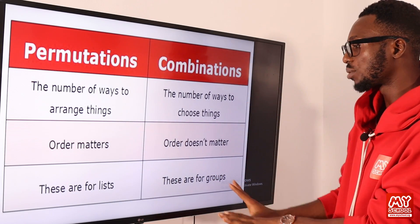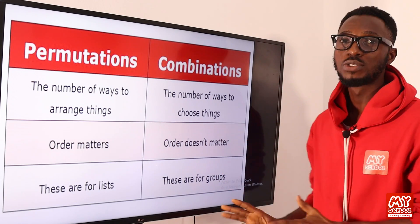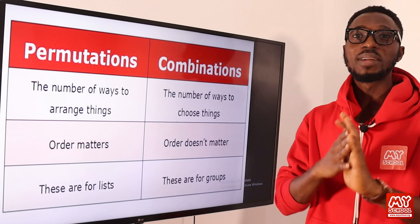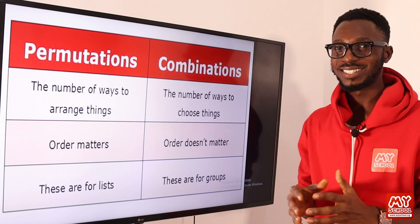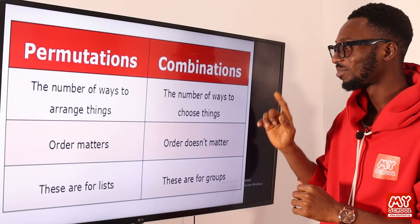Then we have combination, which is for groups. So you want to group things together — like your animal kingdom or your plant kingdom and the like. Let's move on to the next slide.